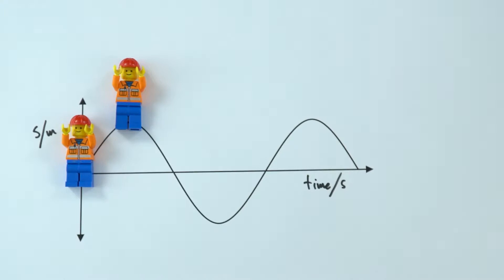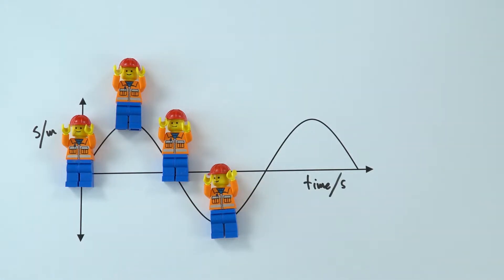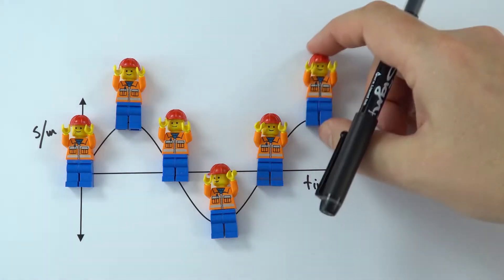As time goes on, they're going to be moving down. And what we can start to do is we can look at the progress of this person over time. Effectively, this is just a distance-time graph that shows how that one particular person, or one particular particle in a wave, is moving.